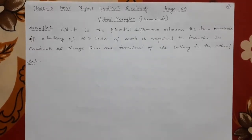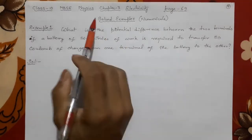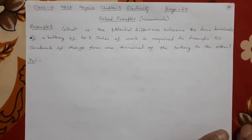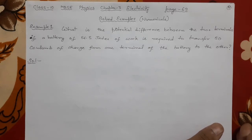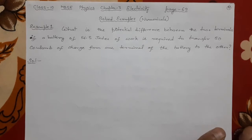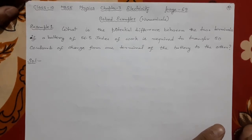Welcome to the SD Online Classes. This is Class 10 MBSC Physics, Chapter 3 — Electricity, page number 69. This is the second lecture. In the previous lecture we finished electric charge, how it is originated, the concept of potential and potential difference, units of potential, and how it is measured. Now in this lecture, the important formula relating potential to work done and charge will be used for solving some numericals.